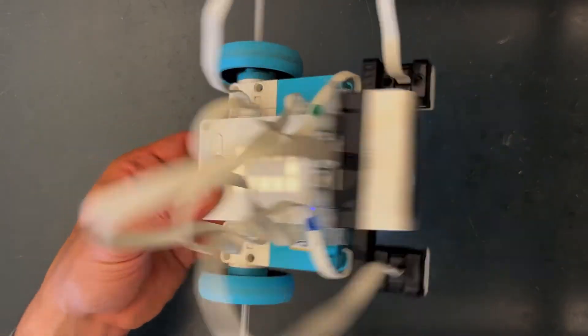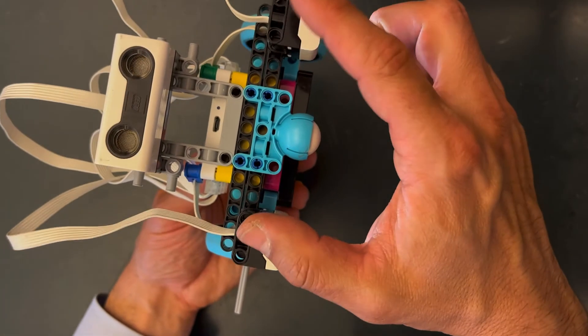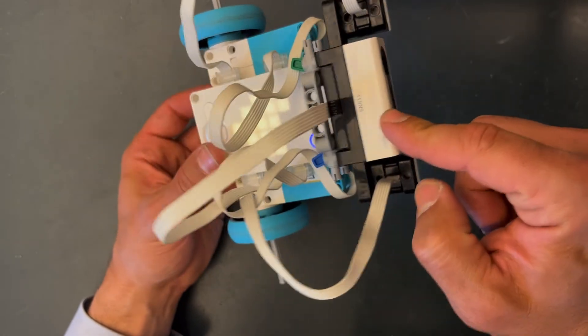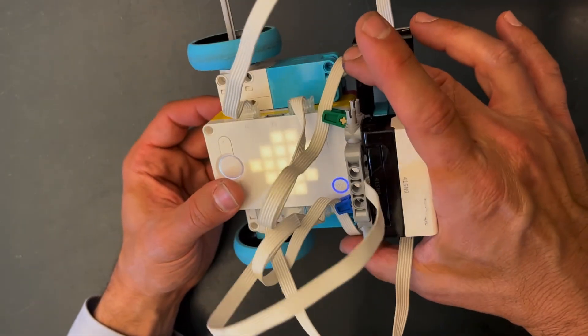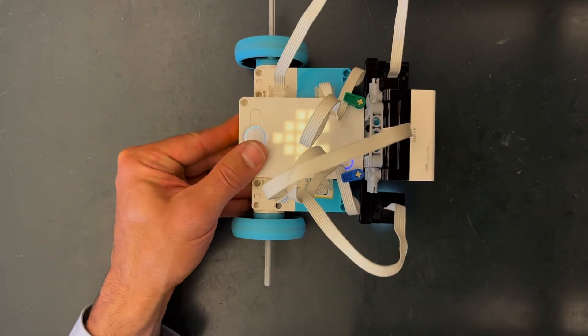So now we have all our wires connected. As a reminder these two light sensors are connected to F and E. This one is connected to D ultrasonic and then the two motors are to B and A. Thank you very much.